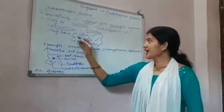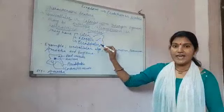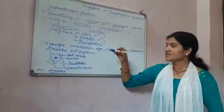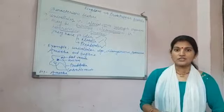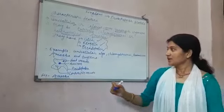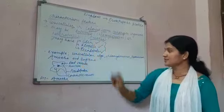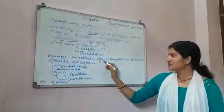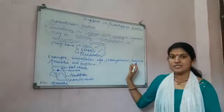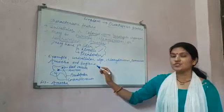They have cilia, flagella, and pseudopodia. These all three structures are related to locomotion. Examples of Kingdom Protista are unicellular algae, Chlamydomonas, Paramecium, amoeba, and Euglena.